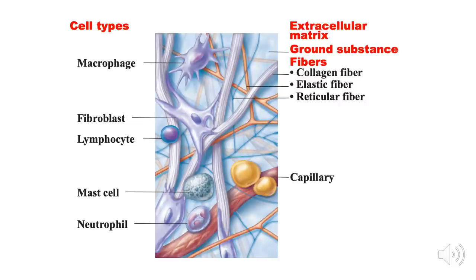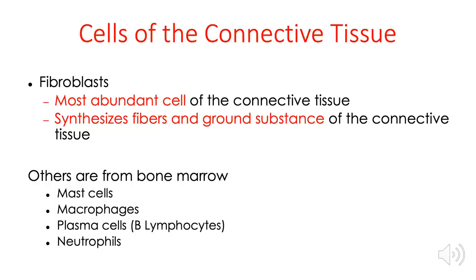We have already discussed the ground substance component. It's now time to discuss the cells. There could be a lot of cells in the connective tissue, but there is one that is considered the most abundant and most important — the fibroblast. It is considered the most important cell of the connective tissue because it is responsible for producing the extracellular matrix, including the fibers and ground substance. Whatever you will see in the connective tissue was produced by this cell — the fibroblast built the connective tissue from scratch.